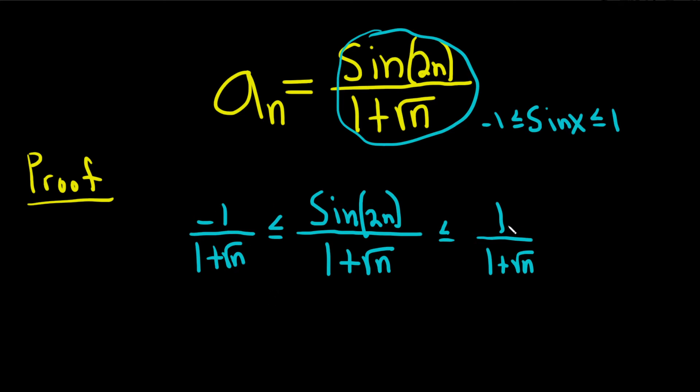Now we just have to explain what happens to these two sequences. Let's start with this one here. We'll take the limit as n goes to infinity of negative 1 over 1 plus the square root of n. As n grows, this fraction gets smaller and smaller, so this limit is 0.